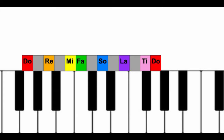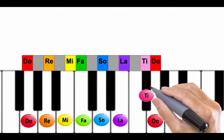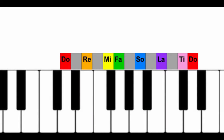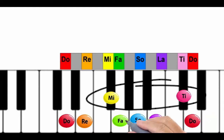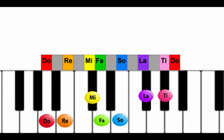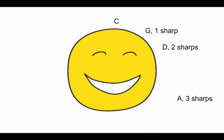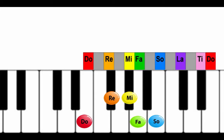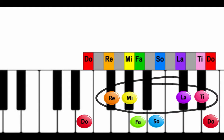There's our C major — no sharps, no flats. Our next one is G major; we go up a fifth. G major has one sharp: F sharp. Next is D major. D major has two sharps. Go up a fifth to A major. A major has three sharps. Go up a fifth to E major. E major has four sharps.